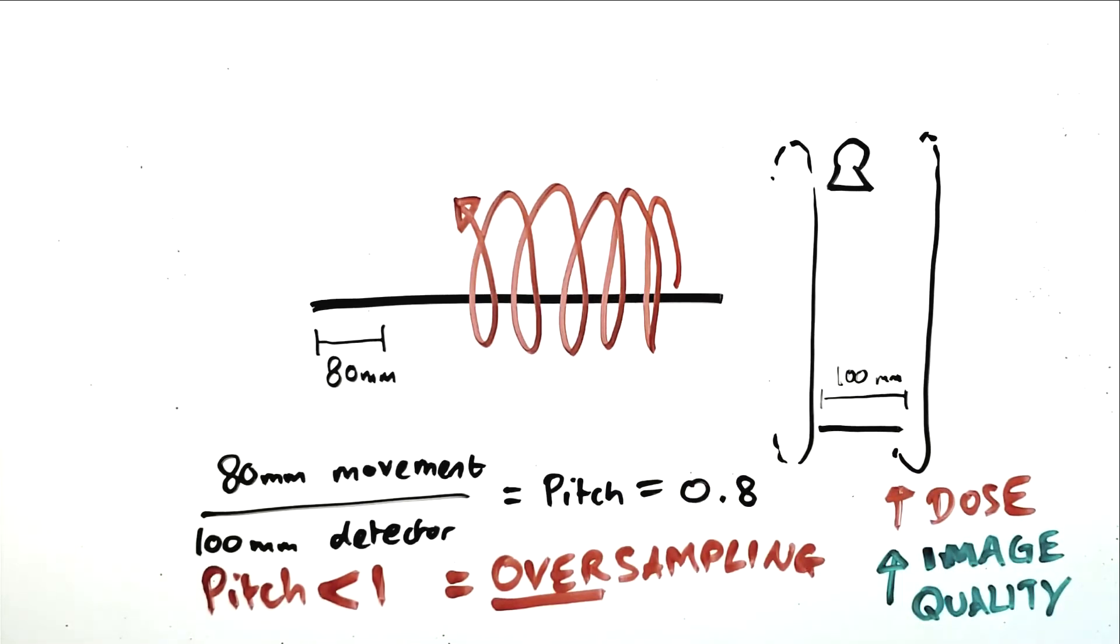Now, this increase in dose may seem wasteful, but the trade-off is that we will have improved detail and less noise when scanning with the lower pitch. This may be used for imaging small structures where a high level of detail is required. For example, when imaging the small structures of the internal auditory canal.